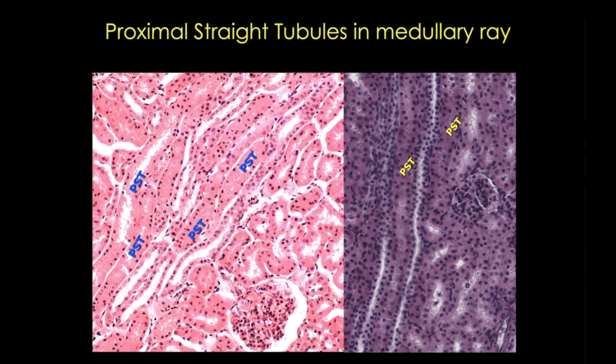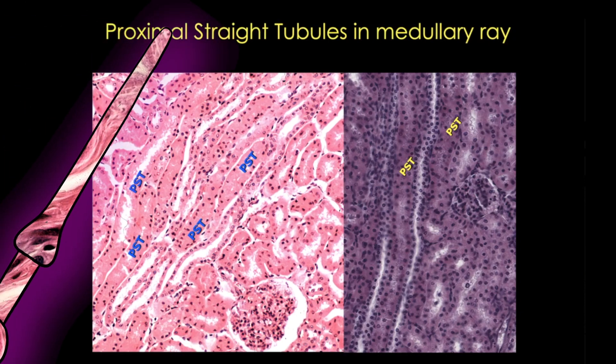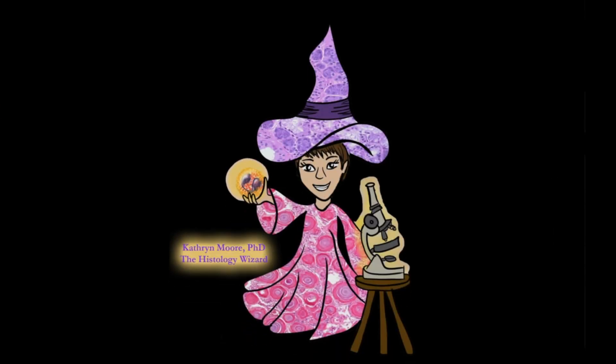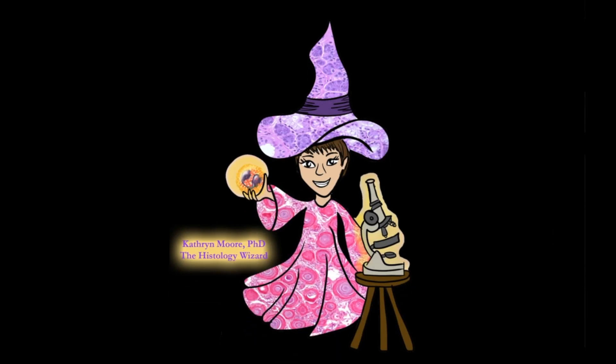With that, we've made it through the proximal tubule, and we'll pick up with the nephron loop or loop of Henle in the next tutorial. Be sure to check out, like, and comment on my other videos. Suggestions and topics are always welcome. Thanks for stopping by.